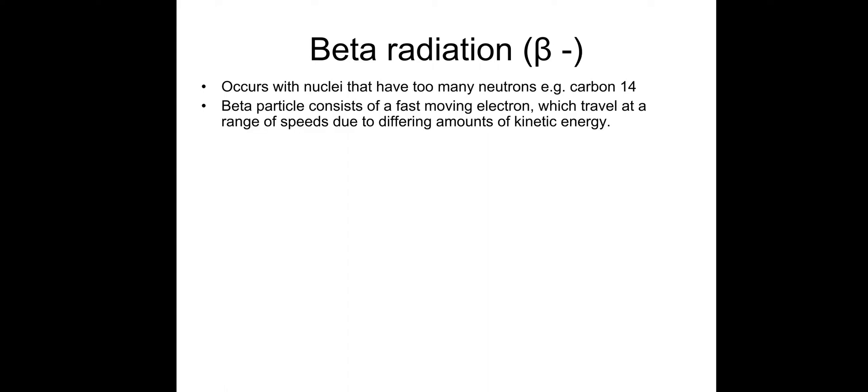So beta radiation, or beta-minus decay. Beta-minus decay occurs with nuclei that have too many neutrons. So an example of this would be carbon-14. A beta particle consists of a fast-moving electron. And these travel at a range of speeds due to the differing amounts of kinetic energy, which they obtain after the decay. In the nucleus, what occurs is a neutron decays into a proton and then ejects an electron from the nucleus. The electron is the beta particle. You also get something called an anti-neutrino, which I'll talk about shortly.